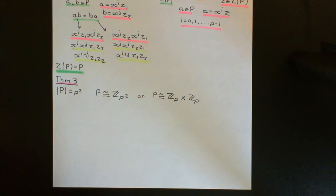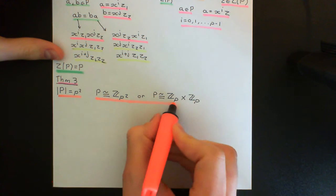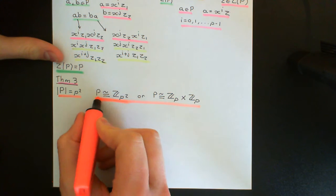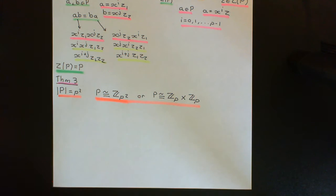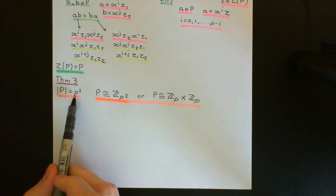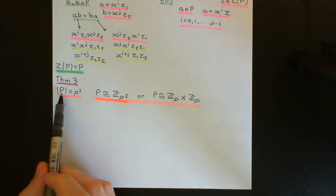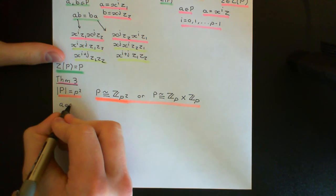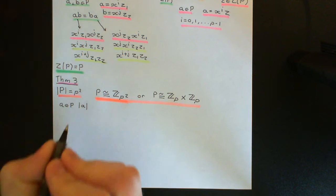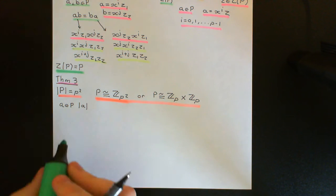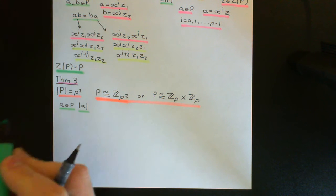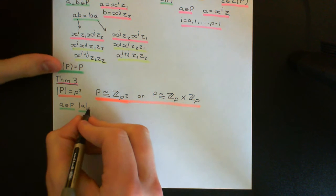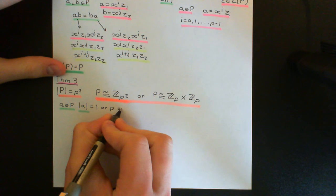Firstly, we'll start off with case one. Note the group capital P has order p-squared. So if you take an arbitrary element A of the group capital P and consider the order of that element — which is the order of the cyclic subgroup that element would generate — it is going to have to divide the order of the group. So it's going to have to be either equal to 1, p, or p-squared. Those are the only options.